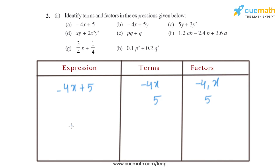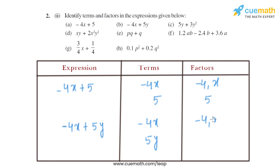Now moving on to part B. The expression given is minus 4X plus 5Y. The terms involved are minus 4X and 5Y. The factors of minus 4X are minus 4 and X, as discussed earlier. Similarly, the factors of 5Y will be 5 and Y, because 5 can divide 5Y and Y can divide 5Y completely.